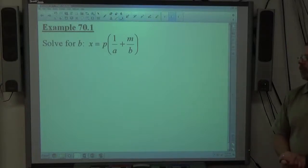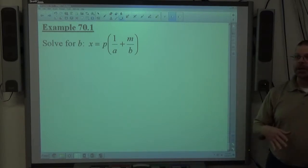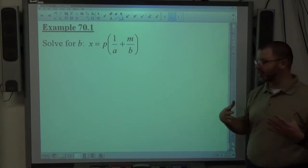Alright, example 70.1, solve for B. We have an abstract equation with parentheses, fractions, the works. So solving abstract equations is what it always has been. The key to the problem is simplification. If you simplify the equation correctly, every abstract equation becomes the same difficulty.